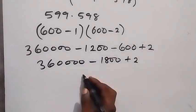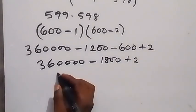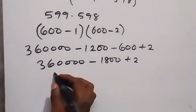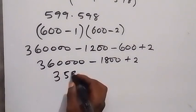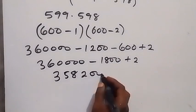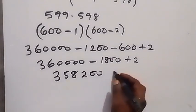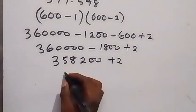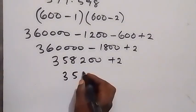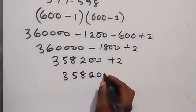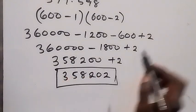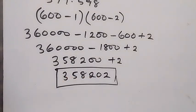So we have 360,000 minus 1800 plus 2. When we subtract, this gives us 358,200, then plus 2. Adding 2 gives us 358,202, and here we have the simplified form of our expression.